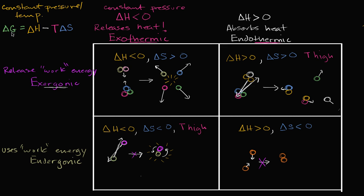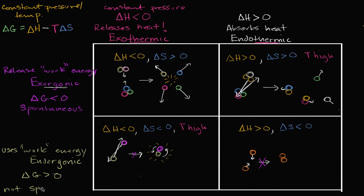So exergonic — something that releases work energy — has less work energy after the reaction than before it, so delta G is going to be less than zero. These reactions that release work energy we consider to be spontaneous. And the ones that absorb work energy — endergonic — will have delta G greater than zero, and we say these are not spontaneous.